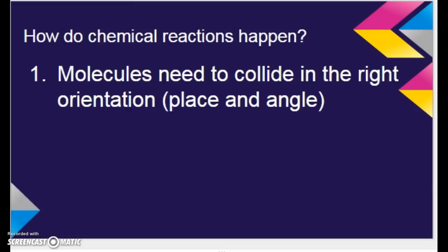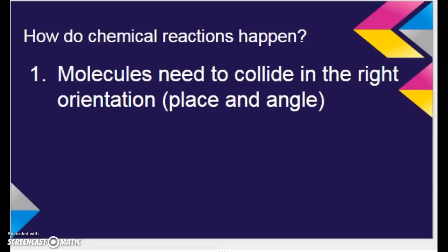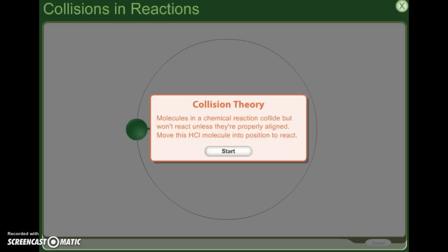So how do chemical reactions happen? Well, it might feel like it just kind of jumped topics, but the fact that molecules are moving is going to be why and how chemical reactions happen. So molecules need to collide in order to react. But not only do they need to bump into each other and collide, but they need to collide in the right orientation. So by orientation, we mean the correct place they need to collide and at the correct angle. So let's look at an example. Collision theory. Molecules in a chemical reaction collide, but they won't react unless they're properly aligned. So they need to be in the right orientation. They need to be the right angle, the right place. So we're going to move this HCl molecule into position to react.